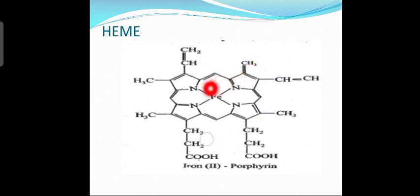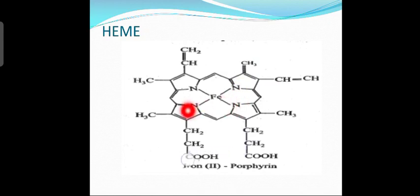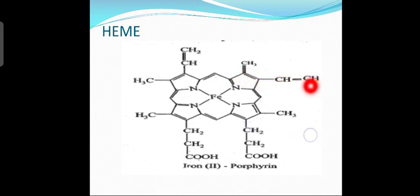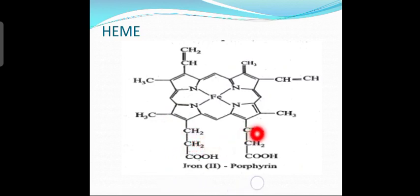In the heme structure, there are four pyrrole rings at the four corners. There is a coordinate bond between two nitrogen atoms and the iron, and one covalent bond. The methane bridges include CH=CH2 groups. Substituents include CH3 and CH2CH2COOH groups on the porphyrin ring.